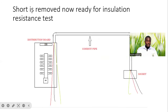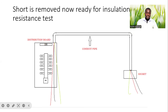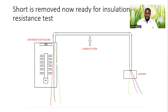Now the short is removed and we are ready for insulation resistance test. This is what we have to do — we remove the short which we had before from the DB side. As you can see on the field side, we have nothing shorted. We are now ready to perform our insulation resistance test.